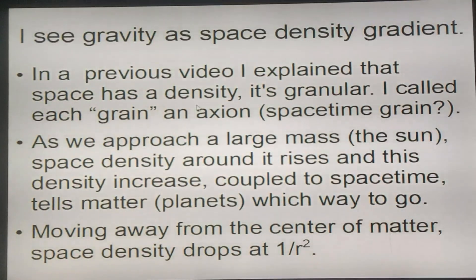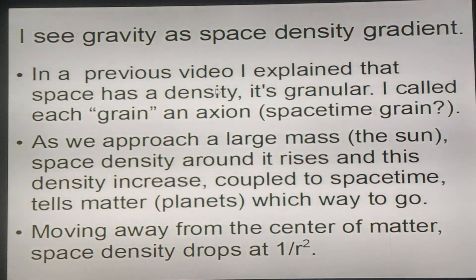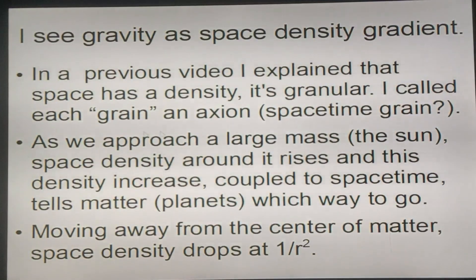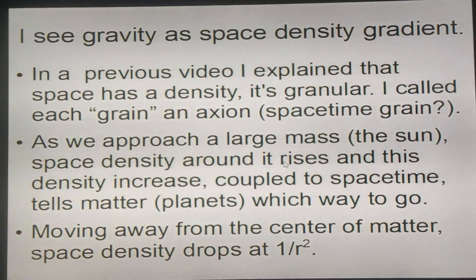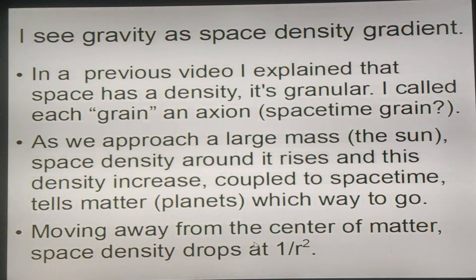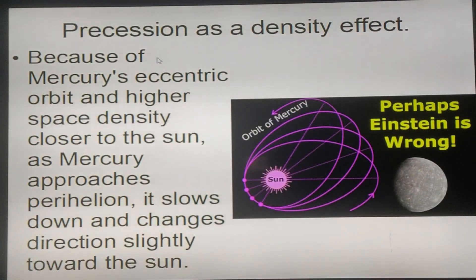I'm going to give you a different perspective. In a previous video, I explained that space has a density — it's granular. I call each space grain an axion; you might call it a space grain, spacetime grain, or string — it's just a label. As we approach a large mass such as the Sun, space density around it rises. This density increase, coupled to spacetime, tells matter and planets which way to go. Moving away from the center of matter, space density drops at one over r-squared.